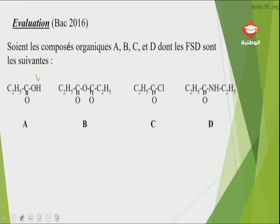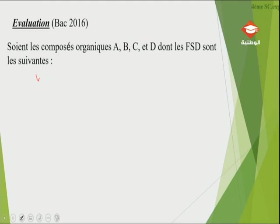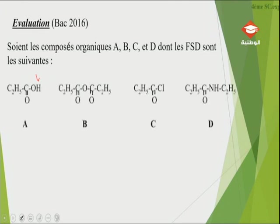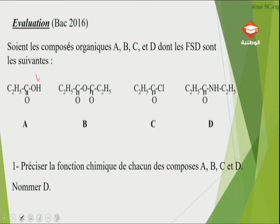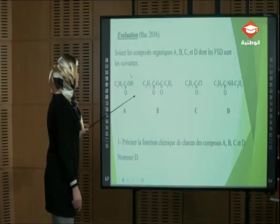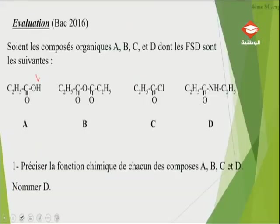Sujet de BAC 2016. Le sujet donne quatre composés organiques A, B, C et D. Première question : préciser les fonctions chimiques de chacun et donner le nom du composé D. Premier composé A : carbone fonctionnel avec OH d'un côté et doublement lié O de l'autre — on reconnaît le groupement carboxyle. Il s'agit d'un acide carboxylique.